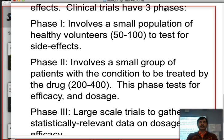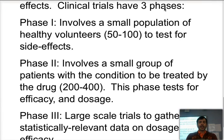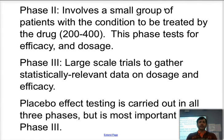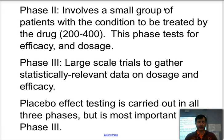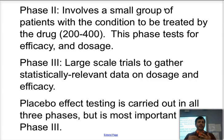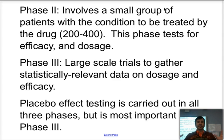Finally, phase three is large-scale testing. We're looking at probably somewhere between 500 to 1,000 people, sometimes larger, depending on the disease. Here we're making the results more statistically relevant by looking at different age groups, different genders, and races, to see whether the drug actually behaves the same way throughout the population.